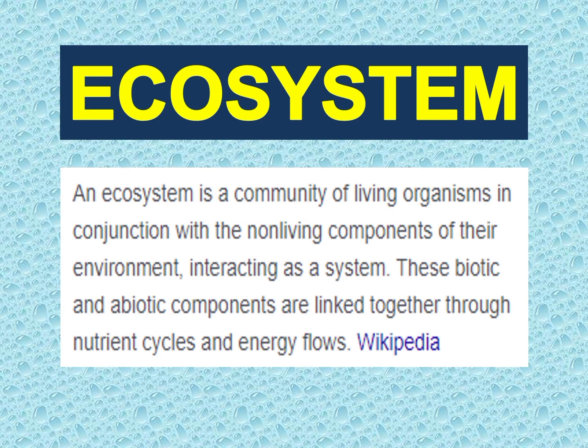Ecosystem, according to Wikipedia, is a community of living organisms in conjunction with the non-living components of their environment, interacting as a system. These biotic and abiotic components are linked together through nutrient cycles and energy flows. So when we say Ecosystem, it is a system of living organisms and non-living components in an environment — like a community where living things and non-living things benefit from and have a relationship with one another.